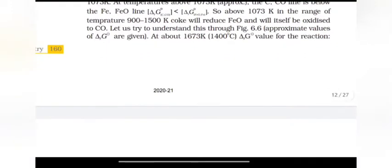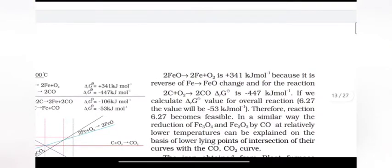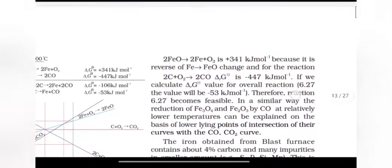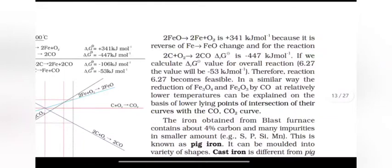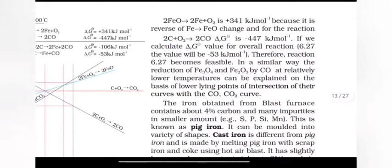the value for the reaction 2FeO gives 2Fe plus O2 is plus 341 kilojoule per mole because it is reverse of Fe gives FeO. And for the reaction 2C plus O2 gives 2CO, ΔrG is minus 447 kilojoule per mole. If we calculate ΔG for overall reaction, therefore reaction becomes feasible.